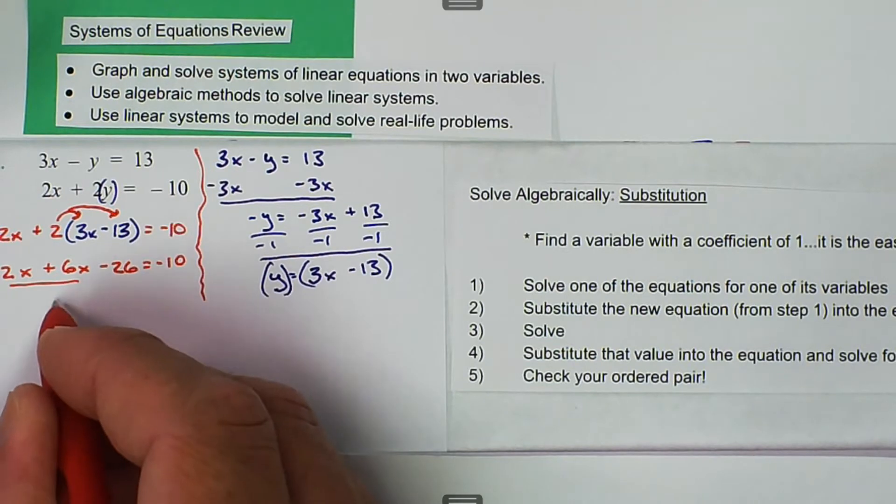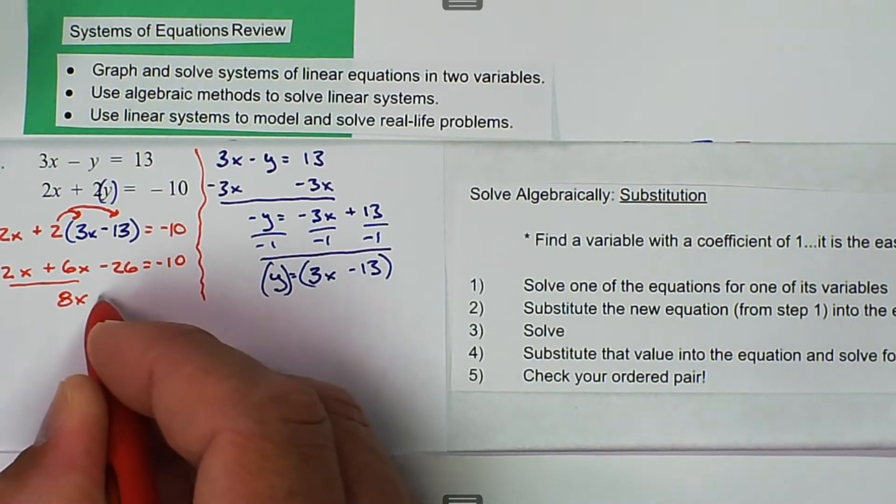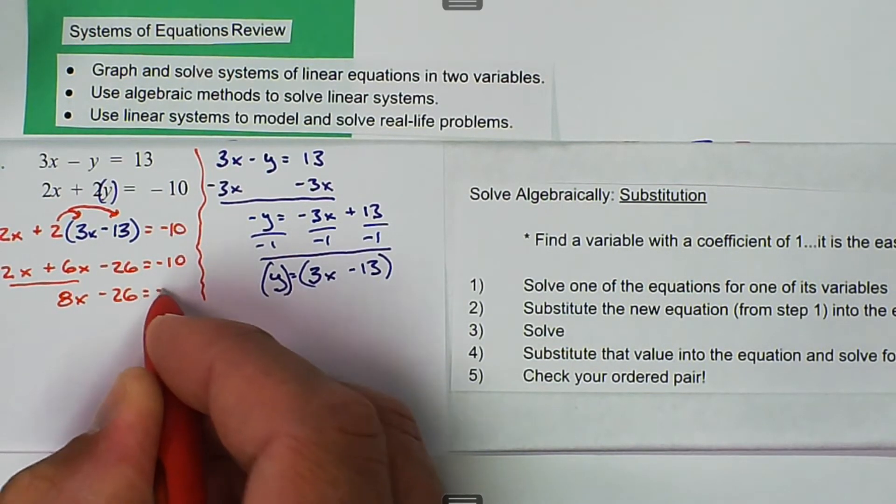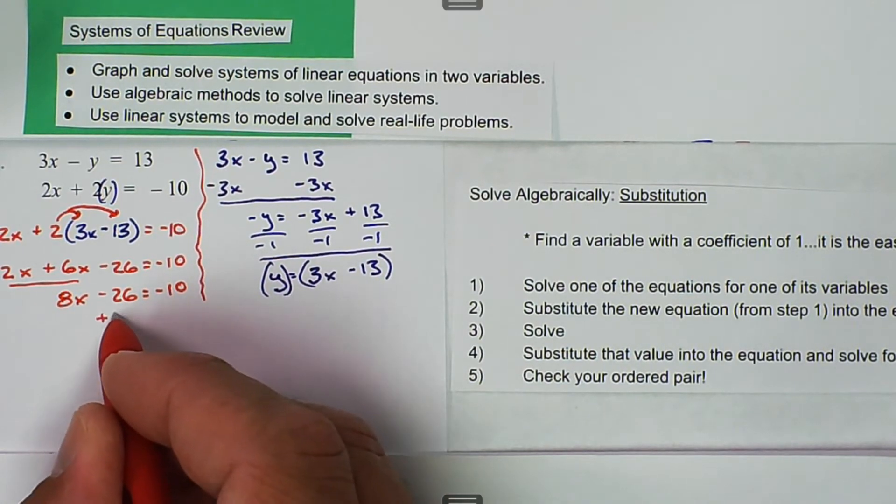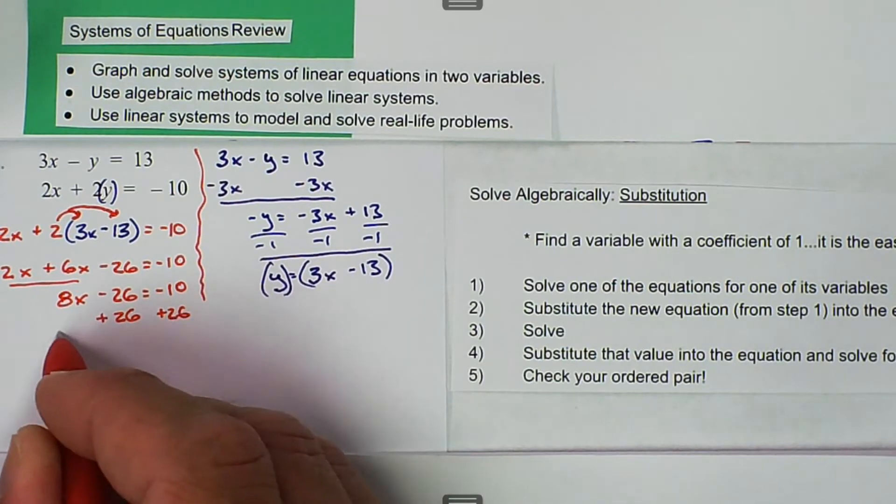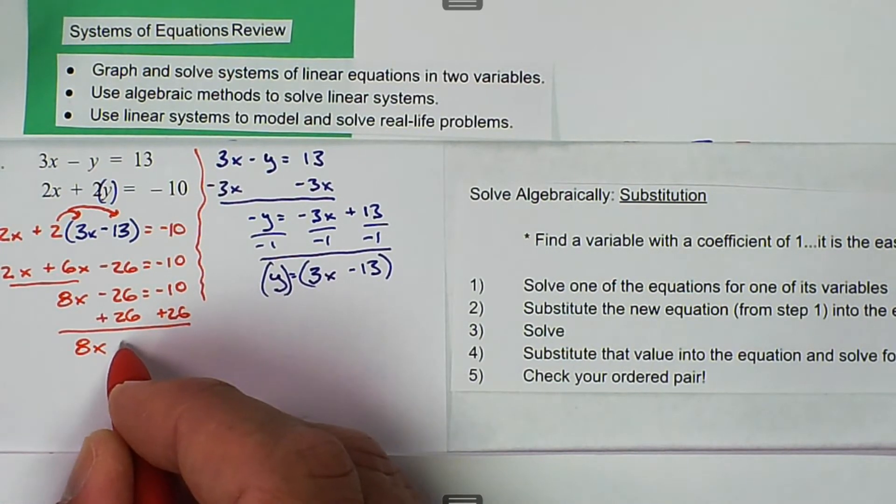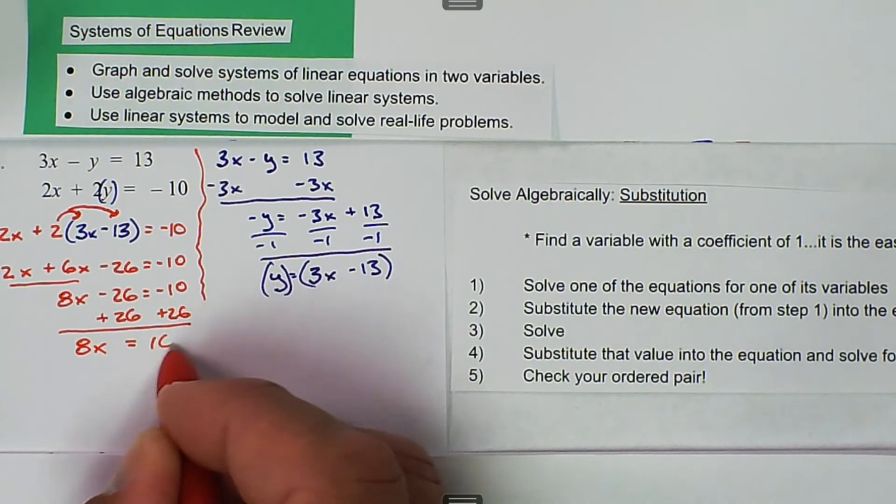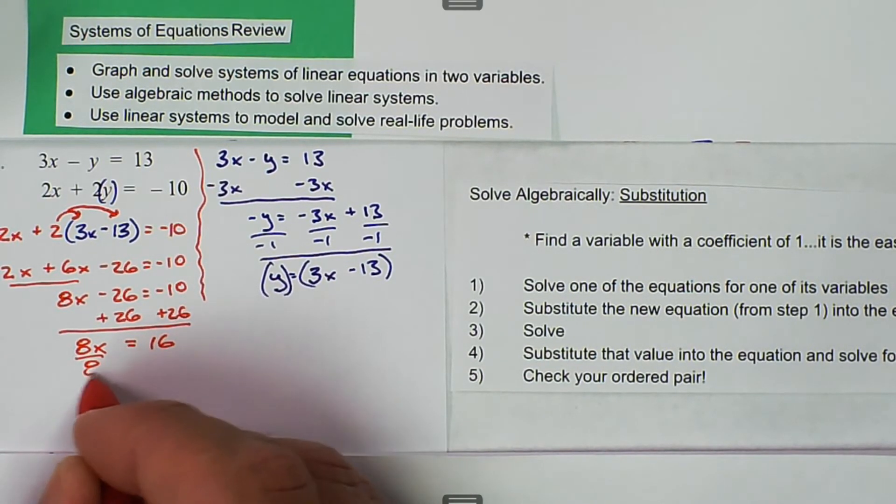We have like terms here, so then we get 8x minus 26 is equal to negative 10. Then we can add 26, and we get 8x is equal to positive 16. Divide by 8, and then we get x is equal to 2.